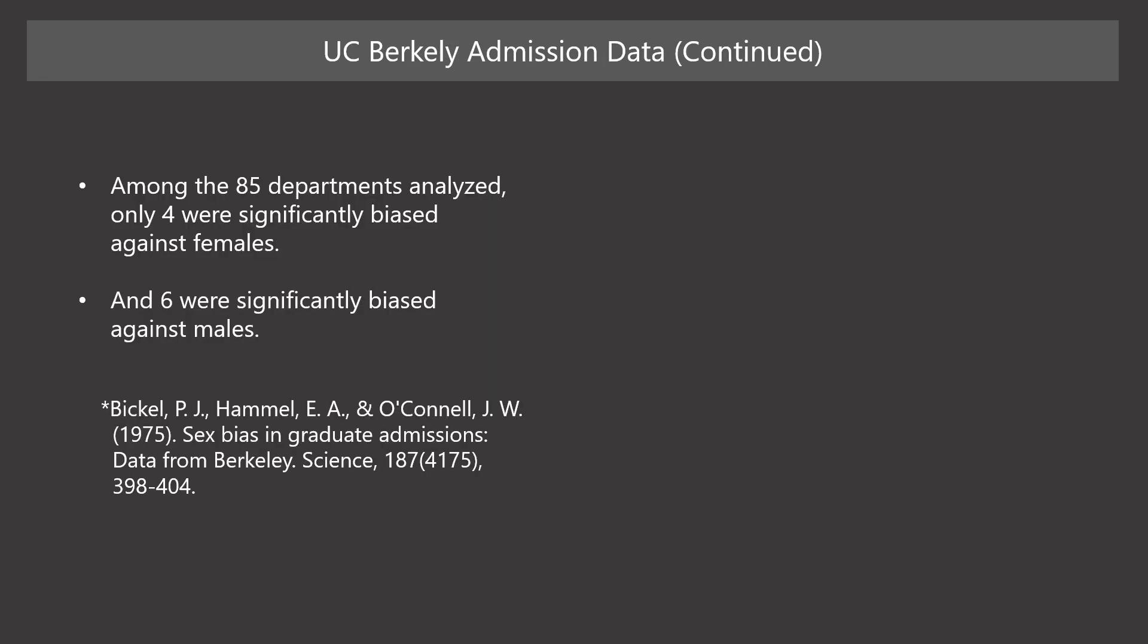However, when you look at the data of a department, we can see a different landscape. According to the author's analysis, only 4 of the 85 departments were significantly biased against females. Why is it that the admission appears to be biased toward males in the previous table?